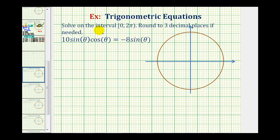We want to solve the trig equation on the interval from zero to two pi. Since both these terms contain a factor of sine theta, we'll set the equation equal to zero and then solve by factoring.